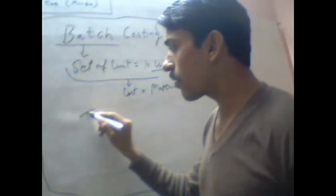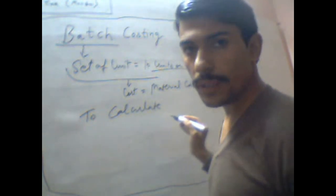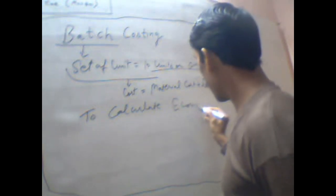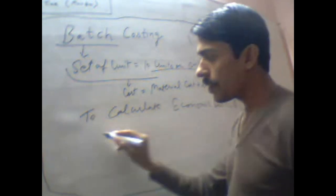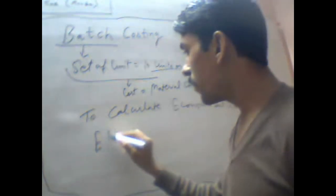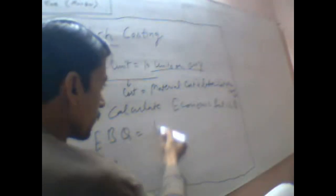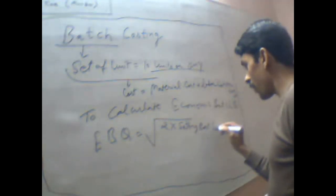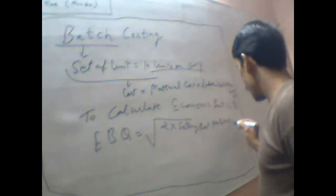One more thing you have to understand in batch costing is how to calculate Economic Batch Quantity, that is called EBQ. The formula involves two multiplied by setting cost per batch and demand for production.